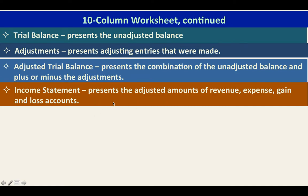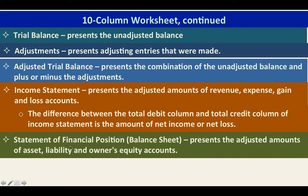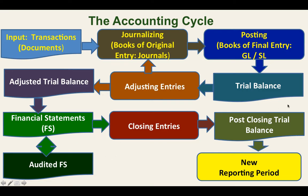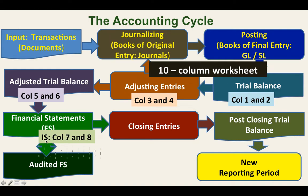The income statement will consist of revenue and expense. The difference between the total debit column and total credit column of the income statement is the amount of net income or net loss. The statement of financial position presents the adjusted amounts of assets, liabilities, and owner's equity. The difference between the total debit and total credit column of the statement of financial position is likewise the amount of net income or net loss. The difference in the income statement and the difference in the statement of financial position should be equal. Let us illustrate the 10-column worksheet.